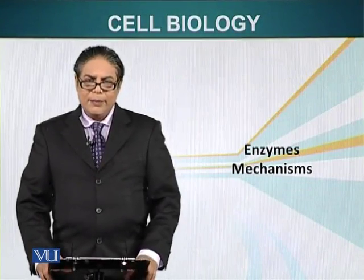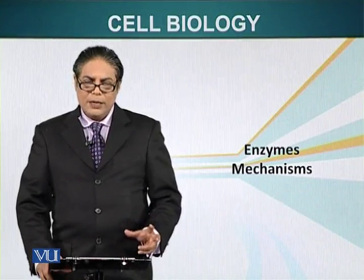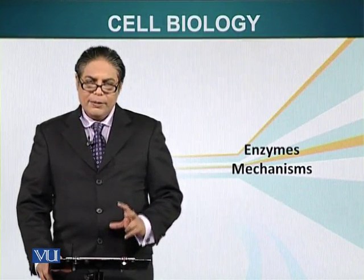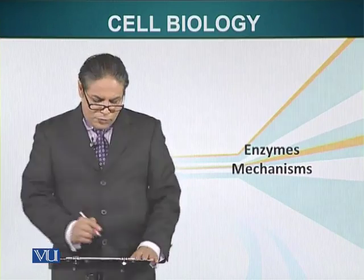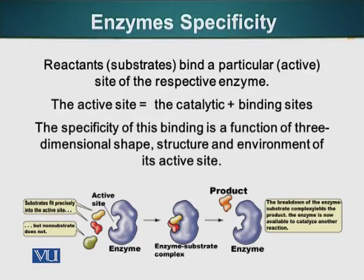In this module we look at the mechanism of how enzymes are able to lower the activation energy barrier. Enzymes have a specific site at which they bind the reactants — in this case we call the reactants substrate molecules. Enzymes bind the substrate at a specific site called the active site, and that's where they catalyze the reaction. The active site is composed of the catalytic domain of the enzyme plus the binding site where the substrate will bind the enzyme.